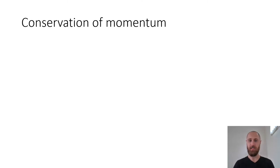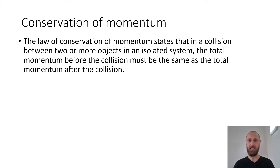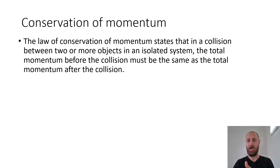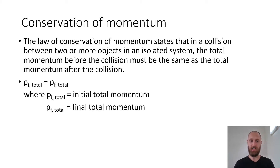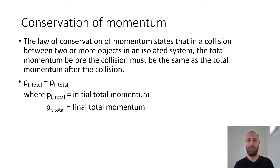This whole lesson is about conservation of momentum. The law of conservation of momentum states that in a collision between two or more objects in an isolated system, the total momentum before the collision must be the same as the total momentum after the collision. We write that as an equation: the total starting momentum P-initial equals the total final momentum P-final. There's quite a bit in that definition with lots of parts to look into, so I'll go through those parts before we go through any examples.